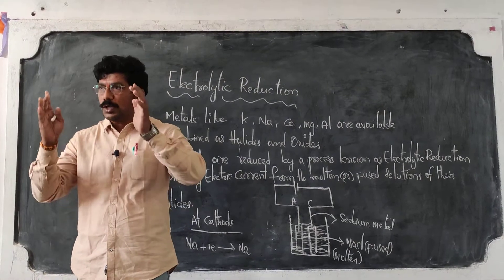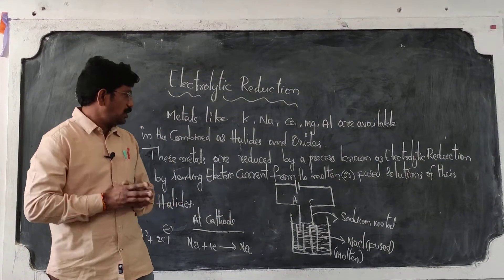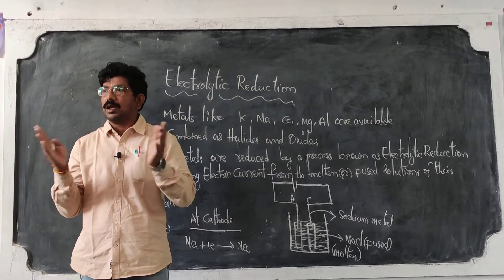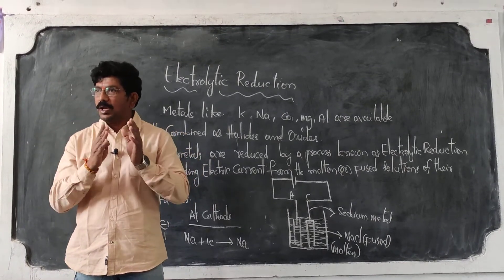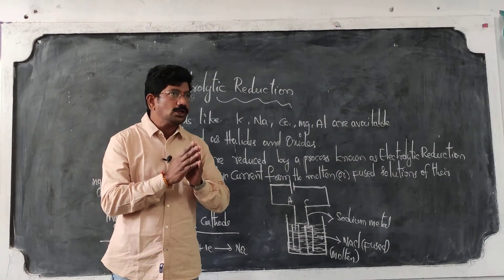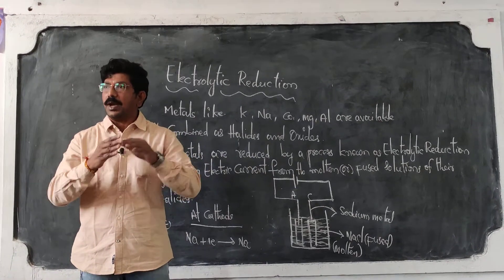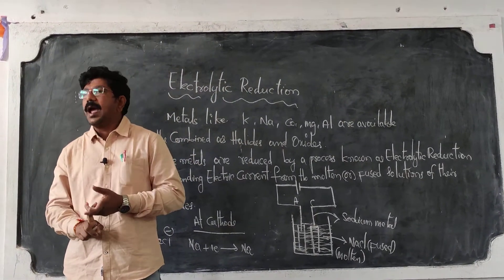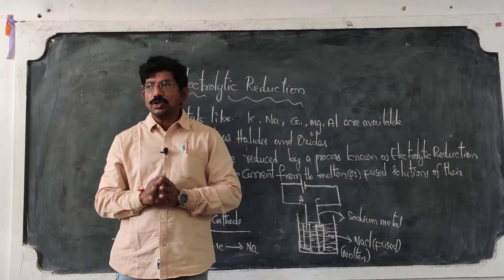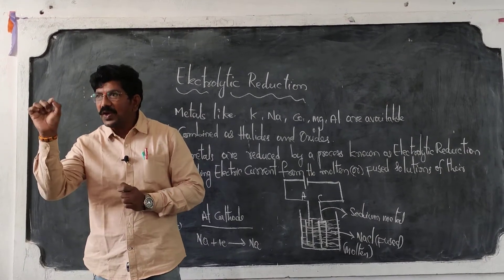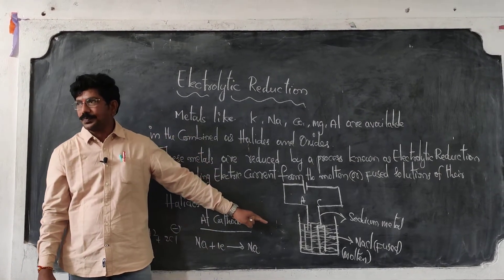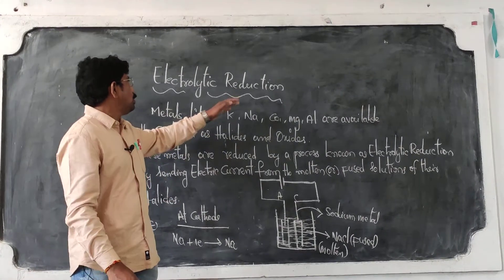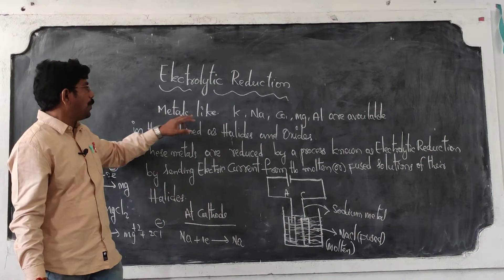In electrolytic reduction, we take the molten or fused solution of the concerned metal halide and insert two metal electrodes. When current passes through the solution, it decomposes to ions — NaCl decomposes to Na⁺ and Cl⁻, MgCl₂ decomposes to Mg²⁺ and Cl⁻. The metal ion receives electrons at the cathode and is deposited in pure form. Addition of electrons is reduction — that is how metals at the top of the reactivity series are extracted.